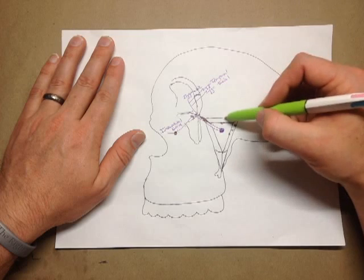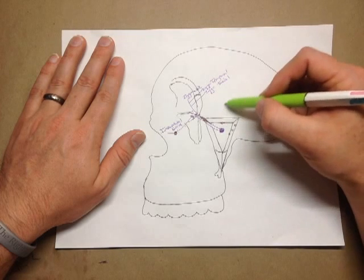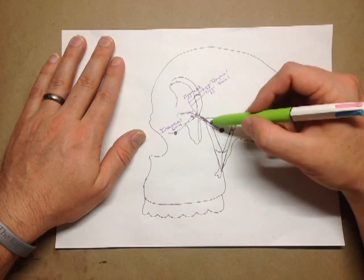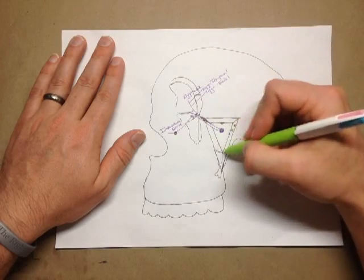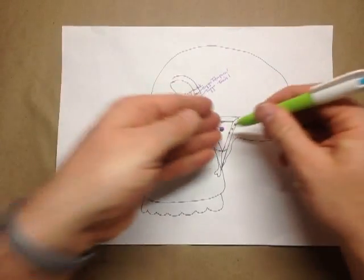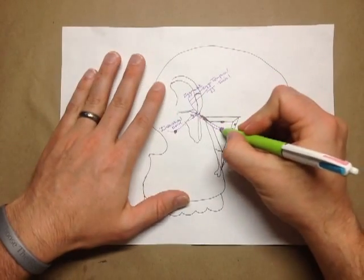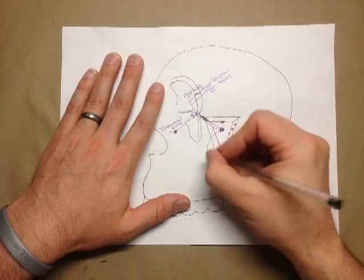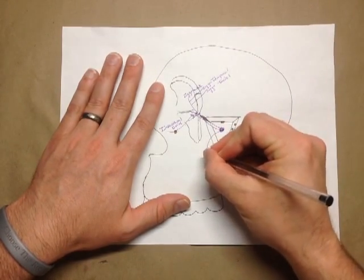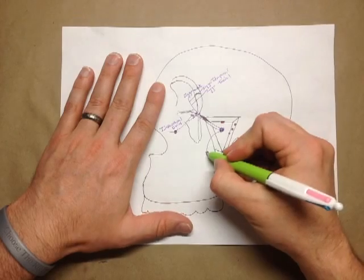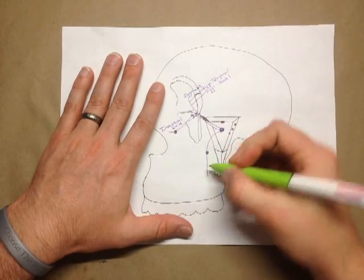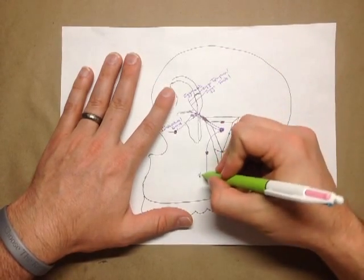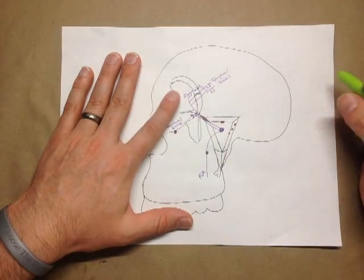This bone right here is the greater wing of the sphenoid. This right here is the maxilla and the pterygoid, so this is the pterygomaxillary fissure that we're looking through. One of these branches is going to jump up out of here and enter into a foramen, coming down here — this is the PSA, the posterior superior alveolar nerve.